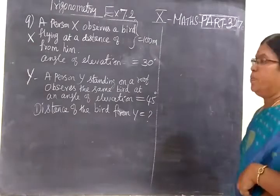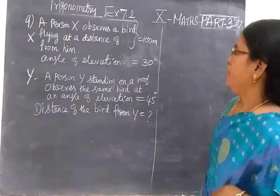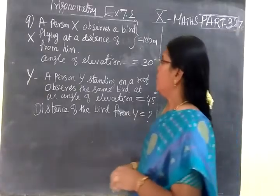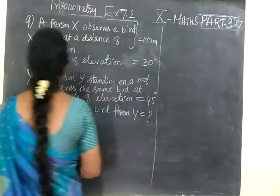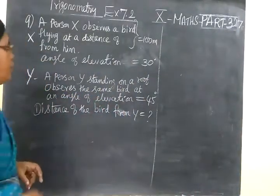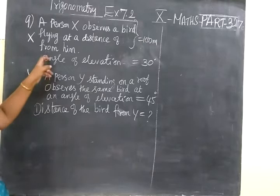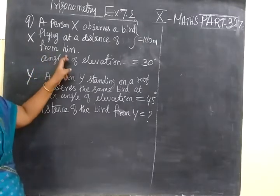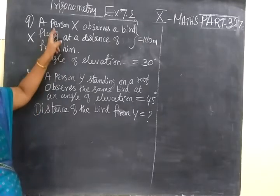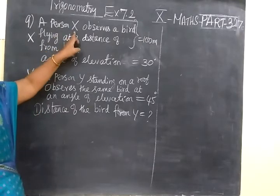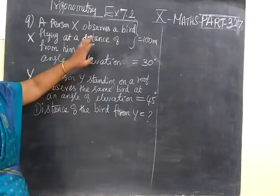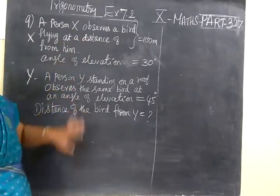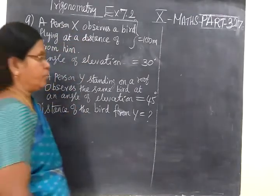So now we see part 327, 9th question. A person X observes a bird flying at a distance of 100 meters from him.